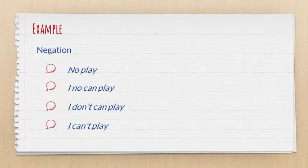So what does this path look like? For example, in the case of negation, you might hear learners go from 'I know play' to 'I no can play' to 'I don't can play,' and eventually 'I can't play.'